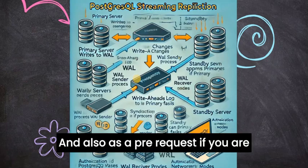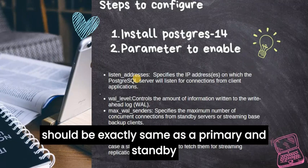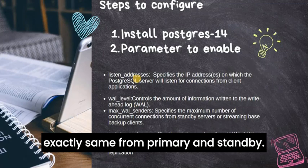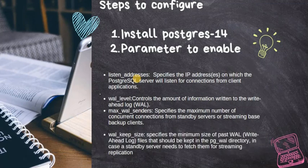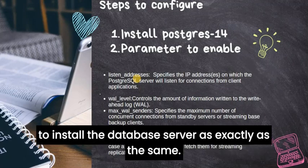As a prerequisite, if you are going to configure streaming replication, the OS level should be exactly the same on primary and standby. Also, the DB server version should be exactly the same on primary and standby. So the first step is to install the database server with exactly the same version. For this demo, I am going to use Docker containers with primary and standby on the same server.